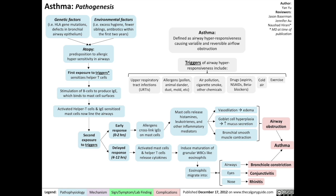Asthma is defined as a disease involving airway hyper-responsiveness, causing variable and reversible airflow obstruction. It's caused by a combination of genetic and environmental factors. Genetic factors could include HLA gene mutations or other genetic issues causing defects in bronchial airway epithelium. Environmental factors include excessive hygiene, fewer siblings, and antibiotics within the first two years of life. All of these factors combine to result in atopy, which is a predisposition to allergic hypersensitivity in the airways.